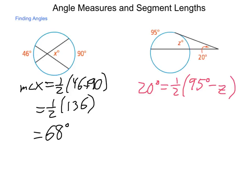So simplifying, multiplication property of equality, multiply both sides by 2, we get 40 degrees is equal to 95 degrees minus z.